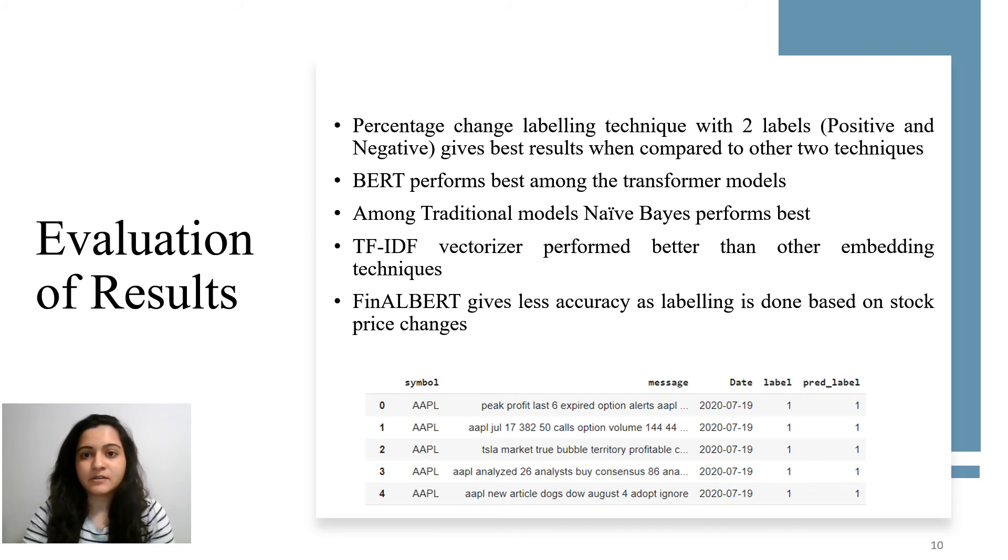BERT performs the best among the transformer models while Naive Bayes is the best in traditional models. TF-IDF vectorizer performed better than the other embedding techniques tested. Additionally, FinALBERT gives less accuracy as labeling is done based on stock price changes and not the sentiments. We also predicted the labels for messages of last two weeks of stock word data for each of the FANG companies. The result for one company, Apple, is shown below which contains the messages, the actual label, and the predicted label.